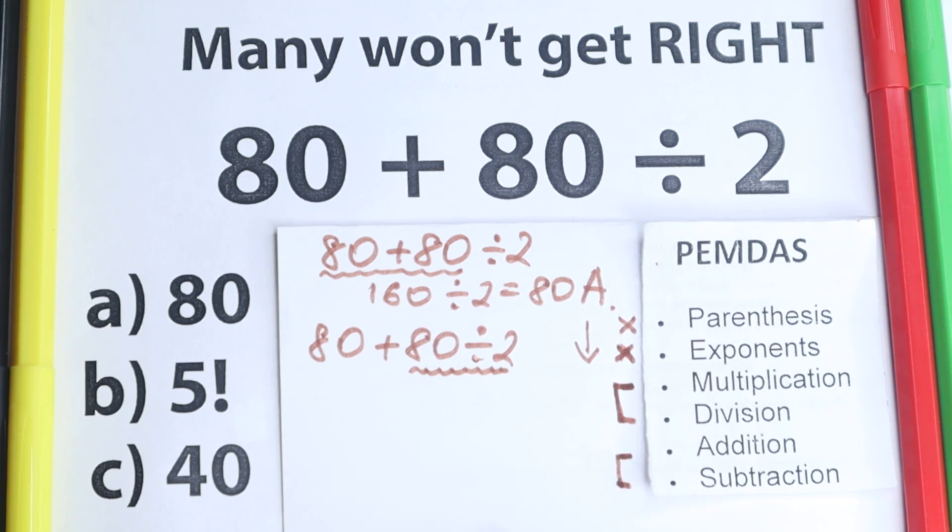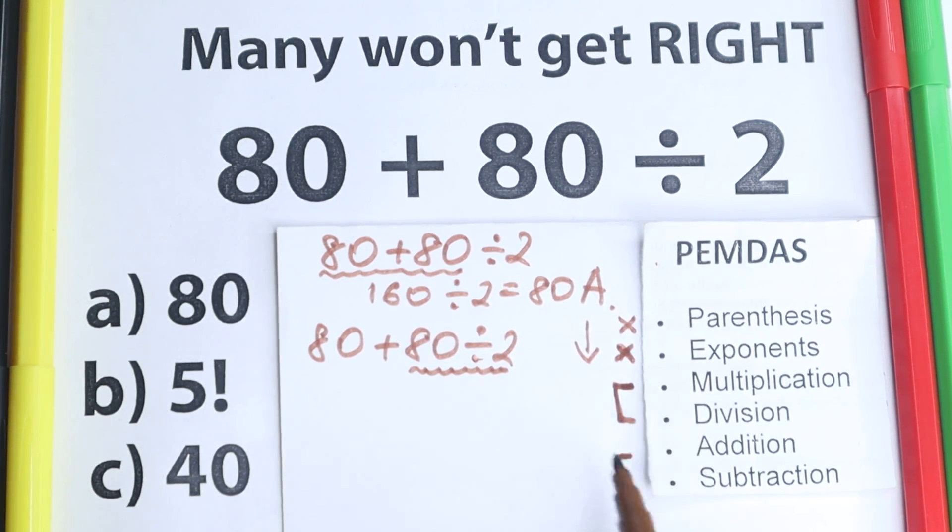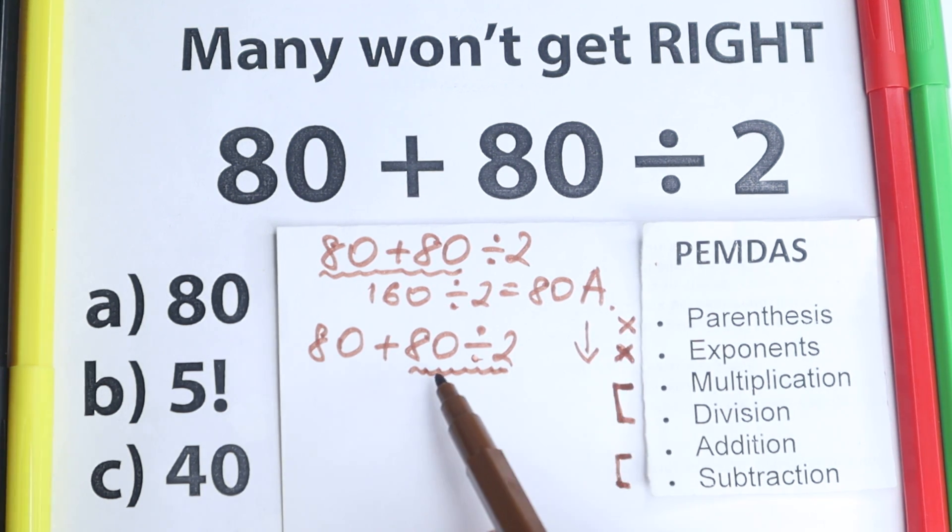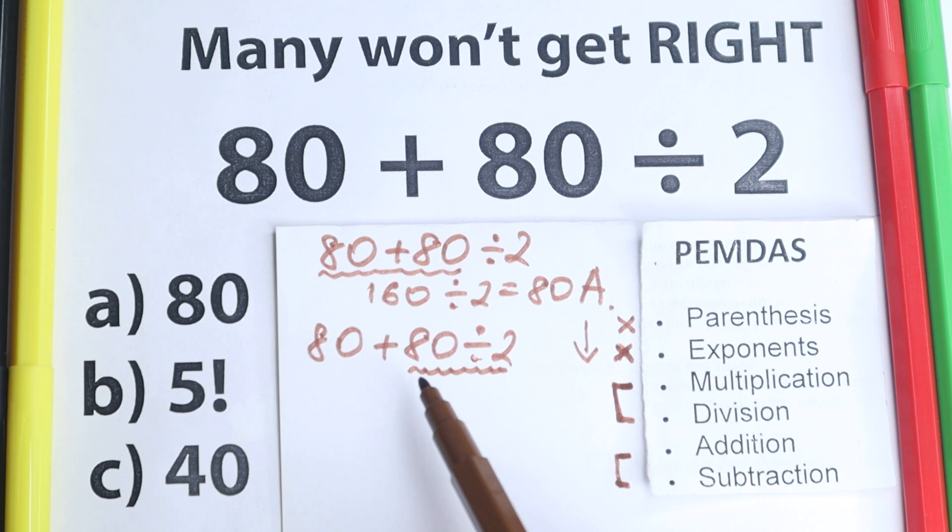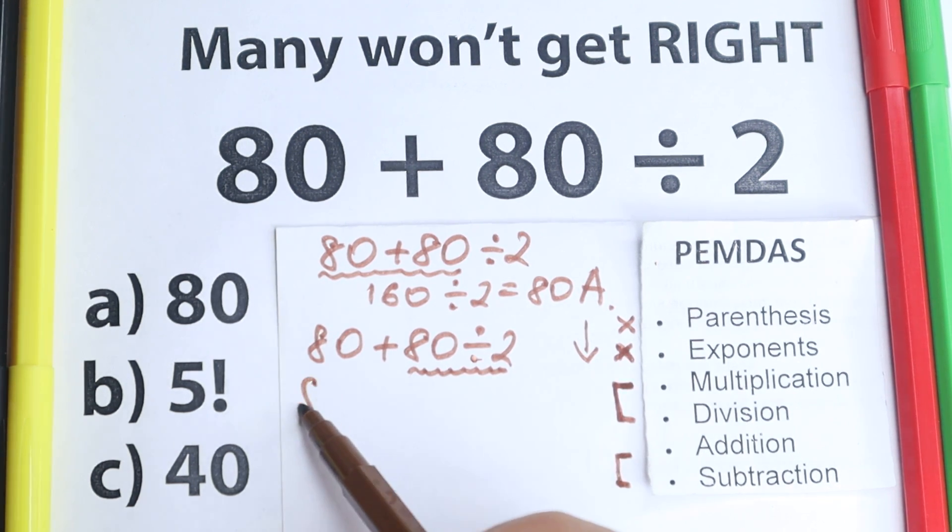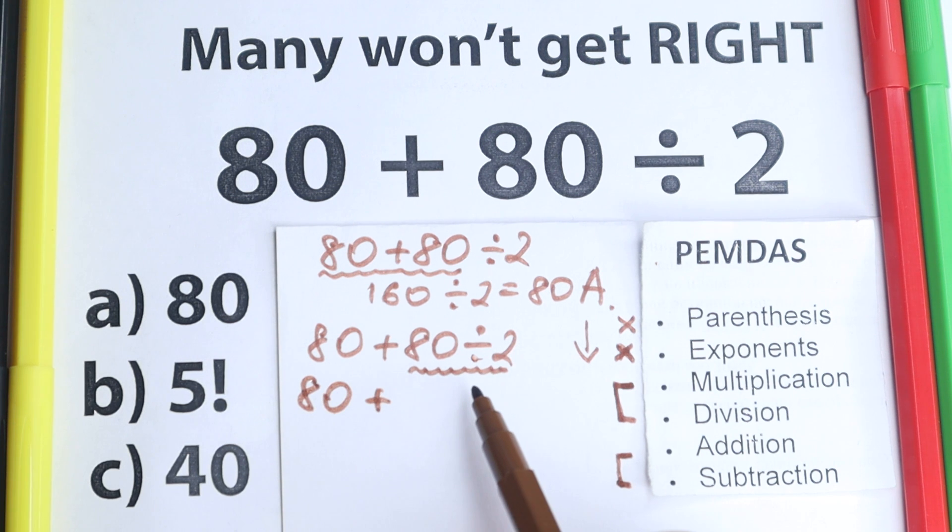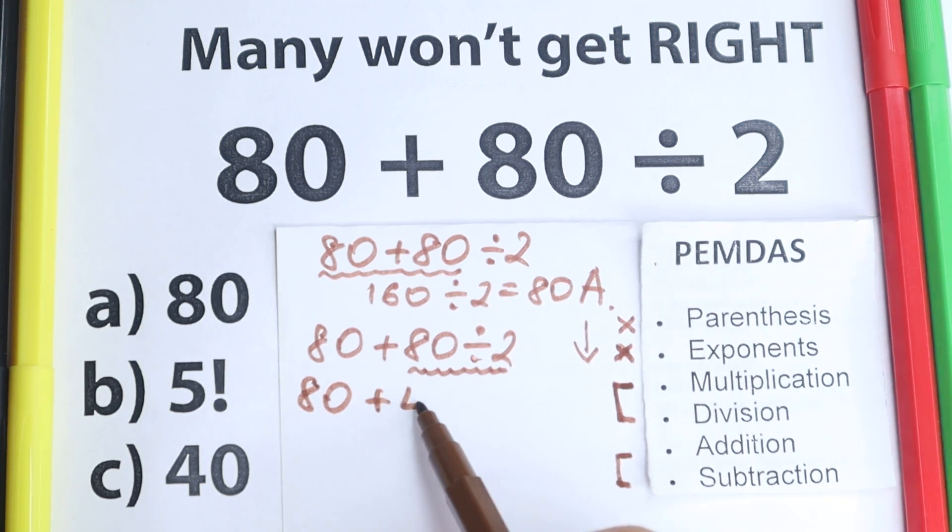So we need to divide at first before addition and subtraction. As you can see we have addition and subtraction as our last step, so this is our last step right here. And we need to divide at first and then we need to add. So let's try to, let's look at it.